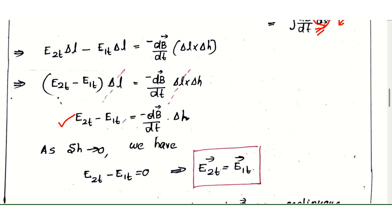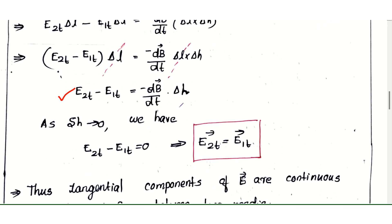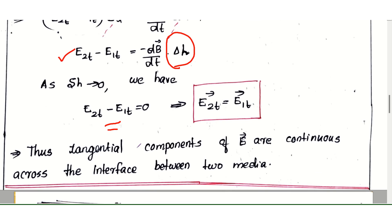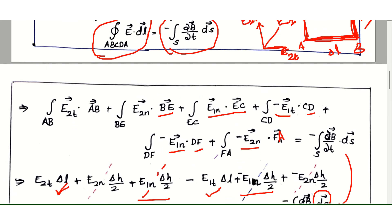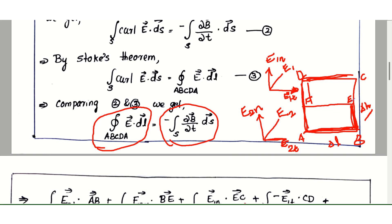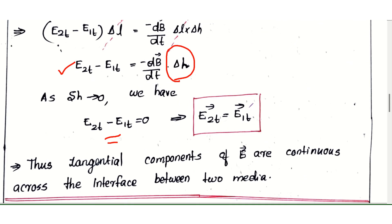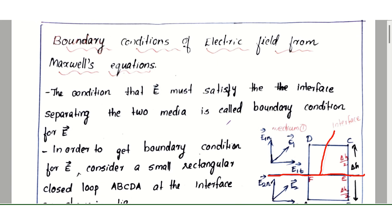Taking the limit as delta-h approaches zero, the normal component terms vanish, giving E2t minus E1t equals 0. That means the tangential component of E is continuous across the interface between two media. That is about the boundary conditions of electric field from Maxwell's equation. Thank you.